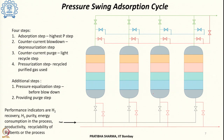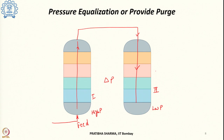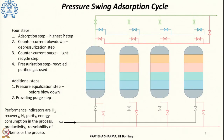Another method could be providing a purge step. The process is similar to the pressure equalization step, except the second bed can be used for providing purging. Either it can be used for the pressurization step or it can provide a purging step using additional beds. However, additional beds mean more steps, more complexity, and more cost associated with the system.